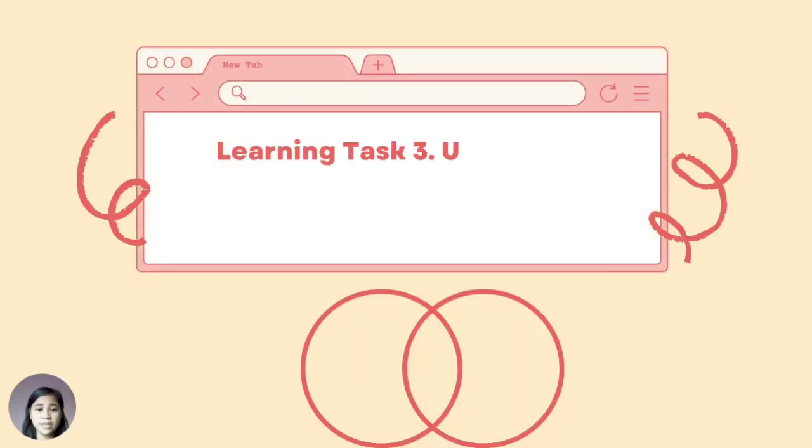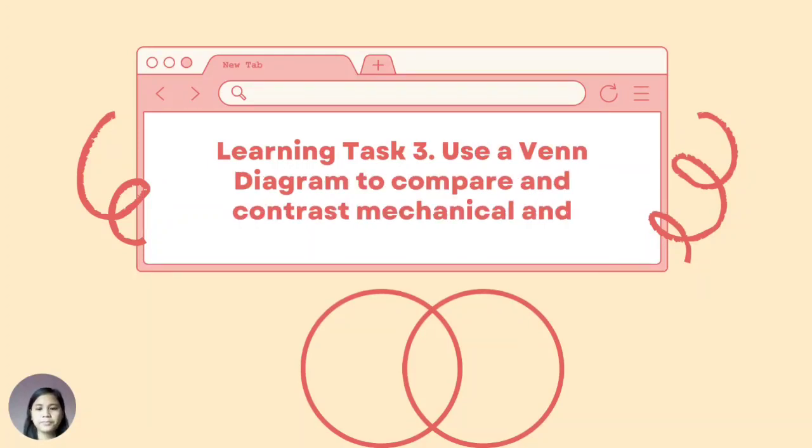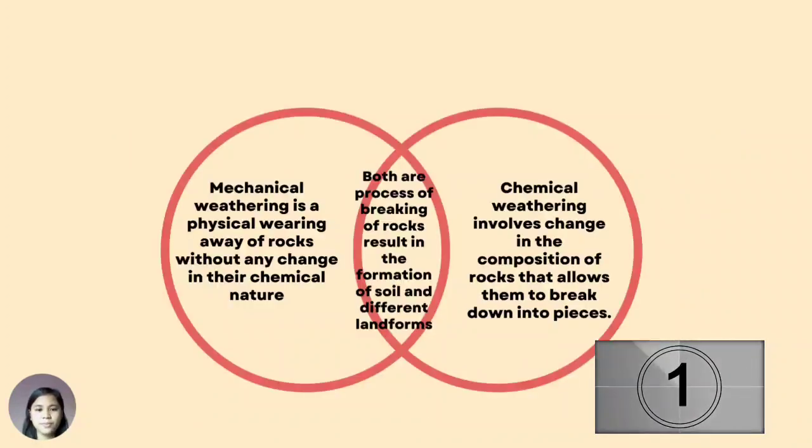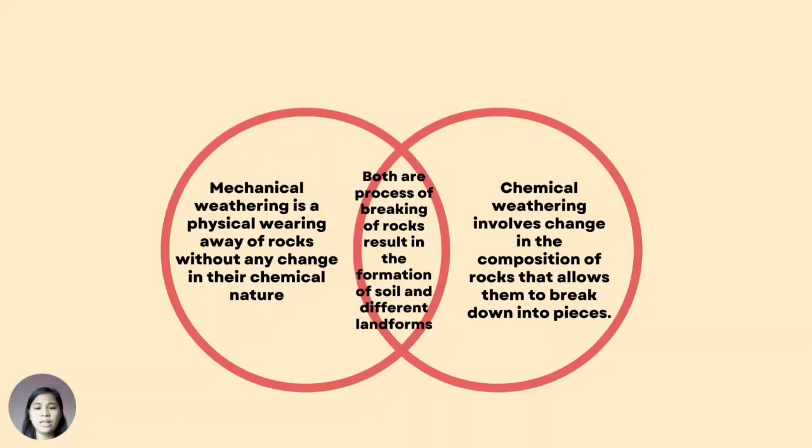For learning task number three: Use a Venn diagram to compare and contrast mechanical and chemical weathering. And this is the correct answer. Mechanical weathering is a physical wearing away of rocks without any change in their chemical nature, while chemical weathering involves change in the composition of rocks that allow them to break down into pieces. But both of them are processes of breaking of rocks that result in the formation of soil and different landforms.